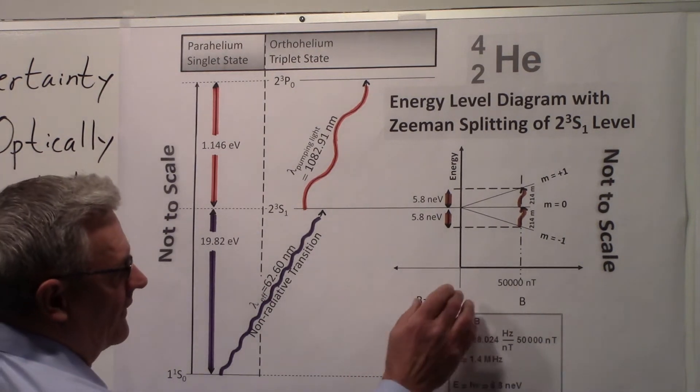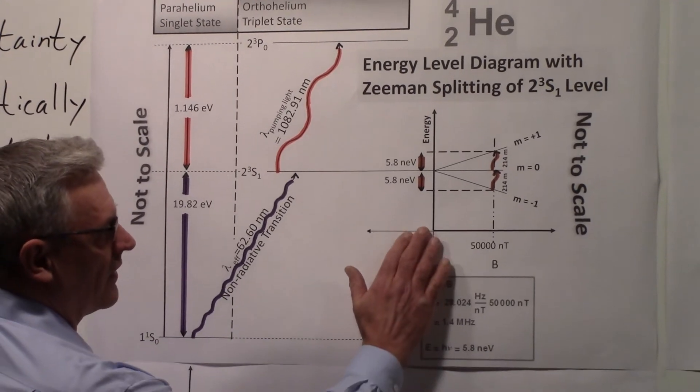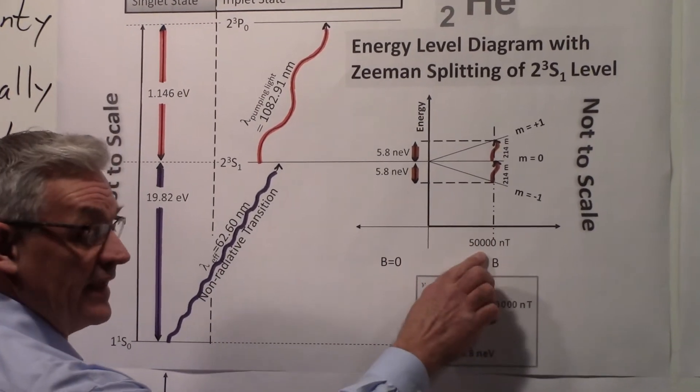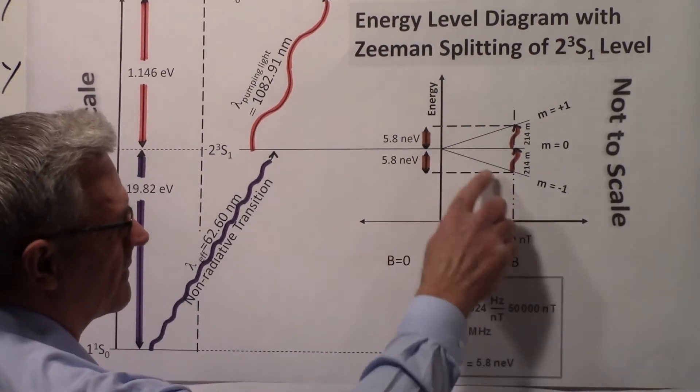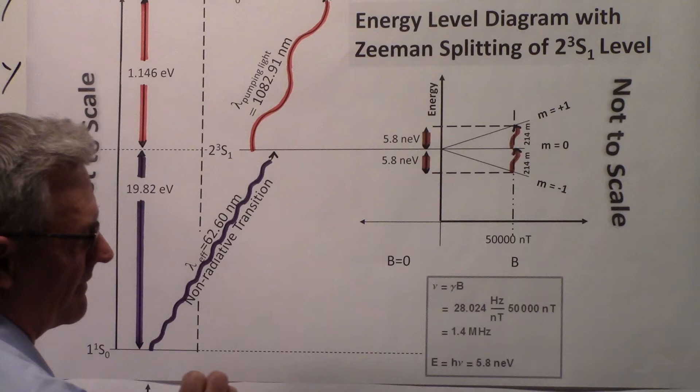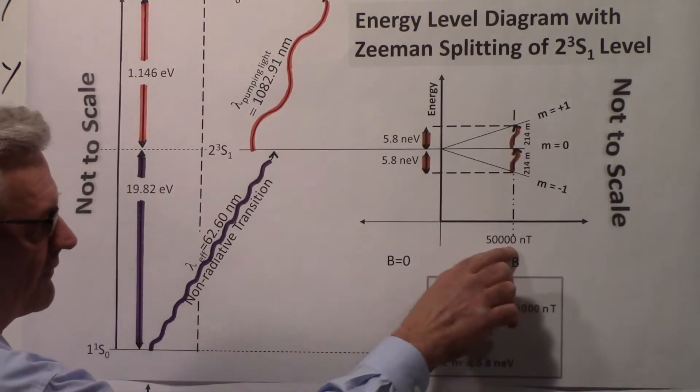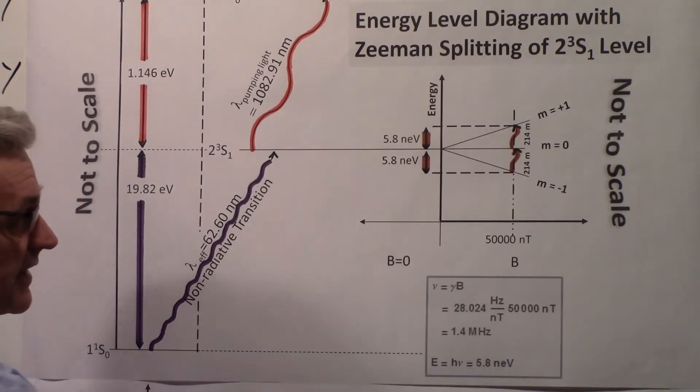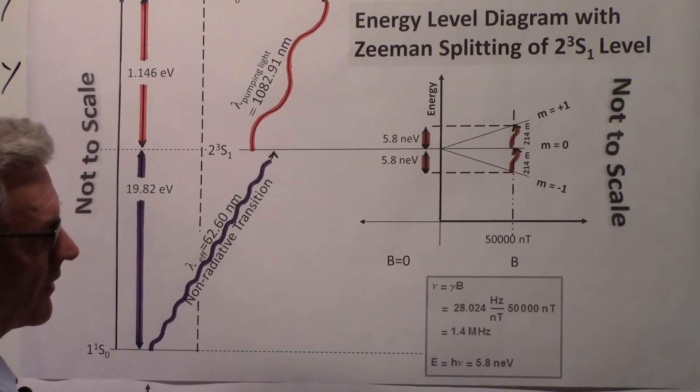In the magnetic field, on this side the field is zero. Over on this side, we have an increasing field. We're taking as an example 50,000 nanoteslas. So the lines get split, and there's a certain energy level difference here. For the value of 50,000 nanoteslas, that works out to 5.8 nanoelectron volts, which is almost no energy at all. But it's good enough to make a magnetometer work.